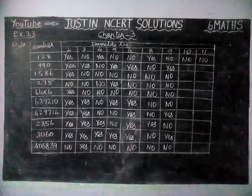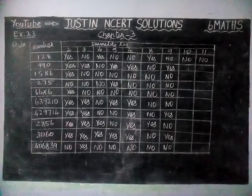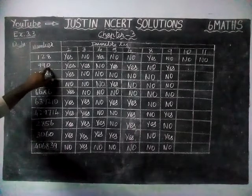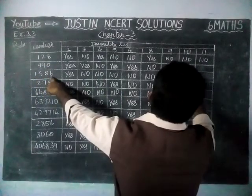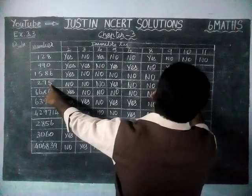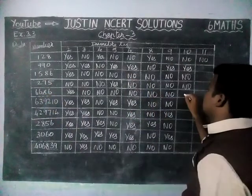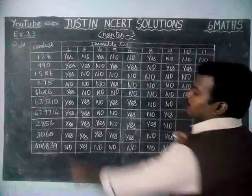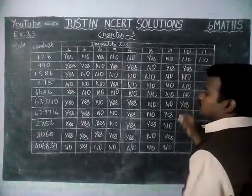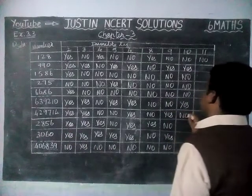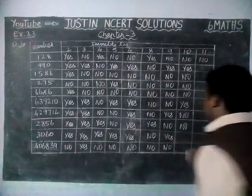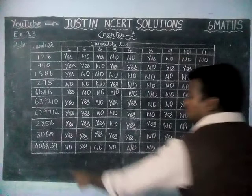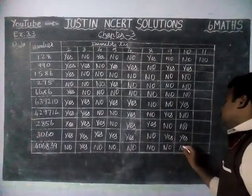Now we are going to check for divisibility by 10. According to the rule: if the 1's place is ending with 0, that number is divisible by 10. Checking: ending with 0 — yes. Next, 6 — no. 1's place is 5 — no. Next, 6 — no. 1's place is 0 — yes. 4 — no. 6 — no. 1's place is 0 — yes. Last number ending with 9 — no.